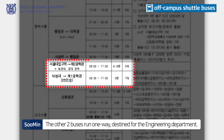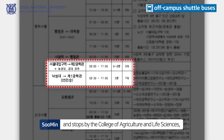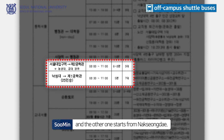The other two buses run one-way, destined for the engineering department. One of them starts from Seoul National University Station and stops by the College of Agriculture and Life Sciences, and the other one starts from Nakseongdae. These two run only from morning until 11am.